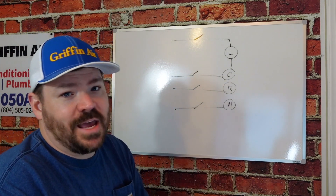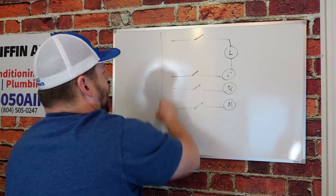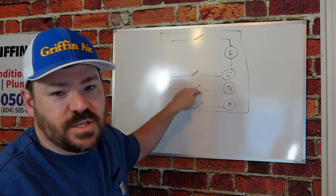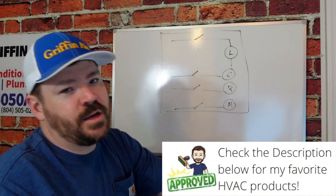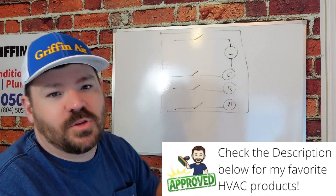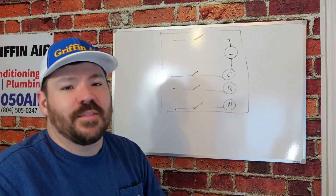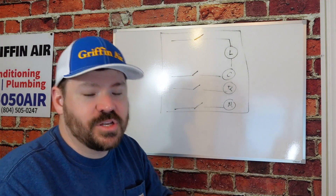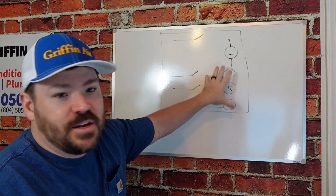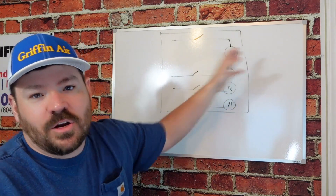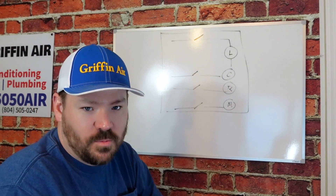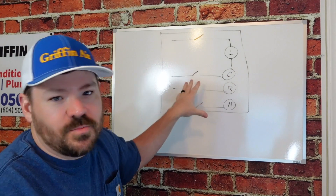That's all a non-communicating thermostat does. All a non-communicating thermostat is, is a series of switches inside. Depending on what mode you put it in and what temperature you set, it will close certain switches and open them up. That's why there are different colored wires, that's why you have to have a certain number of wires. Inside your thermostat, you have a whole bunch of switches that can close and tell things in the heating and air system: 'I need you to close now, I need you to turn on.' So on a basic level, that's a non-communicating thermostat.